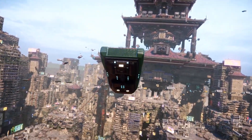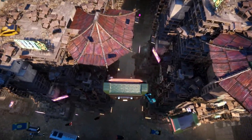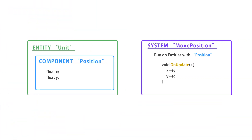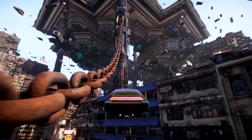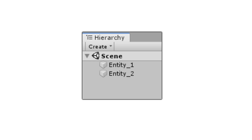With regards to code, the main thing you need to understand is how it should be organized. You have entities, components, and systems. Components hold data, systems process that data, and entities refer to individual instances of component data. You can think about it in terms of how it relates to the normal game object system. An entity is like a specific game object — so if you have two game objects in your scene, each of them would be an entity.